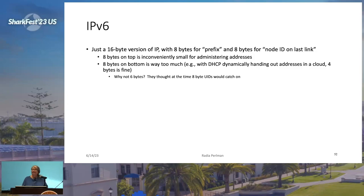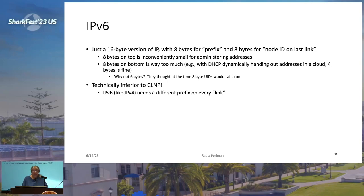Others argued we're not immediately out of IPv4 addresses and we are brilliant, so given a little time we can invent something so much better than CLNP — we'll win Nobel prizes! The decision was: let's do something new and call it IPv6. IPv6 is just a 16-byte version of IP where the top eight bytes is the prefix and the bottom eight bytes is the node ID on the last link. Eight bytes on the bottom is way too big — especially after they invented DHCP where three or four bytes is enough. And eight bytes on the top is inconvenient for globally allocating address blocks. IPv6 is technically inferior to CLNP because you still need something to disguise a cloud as a link, and you need something like ARP to get the address on the last link.